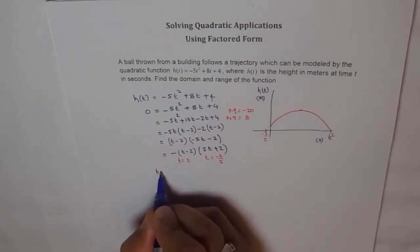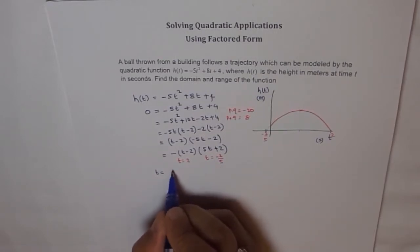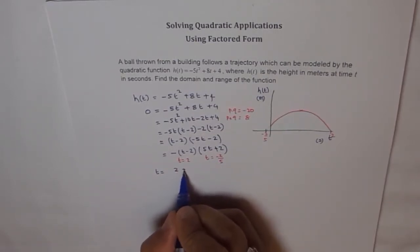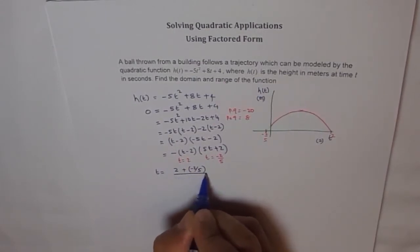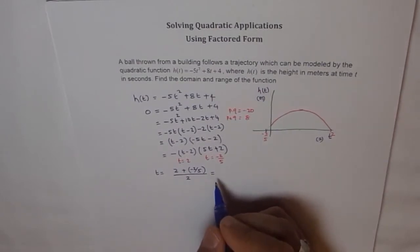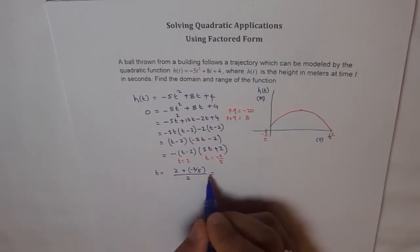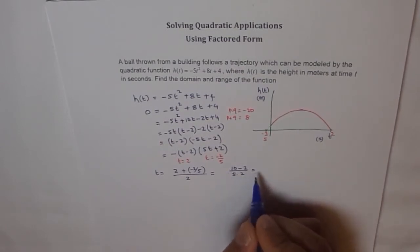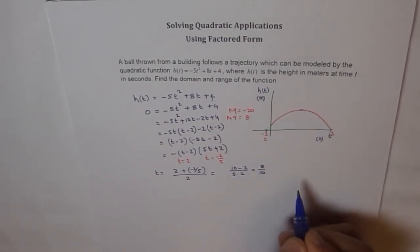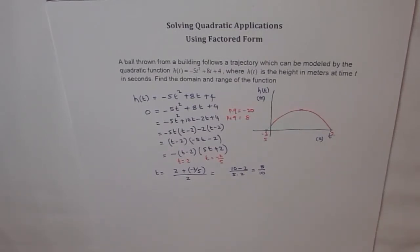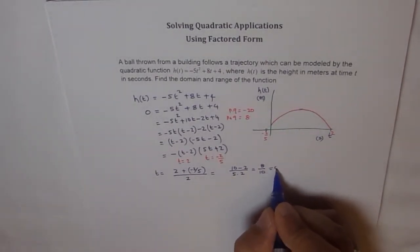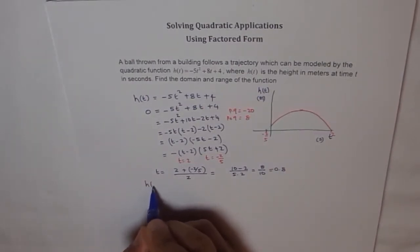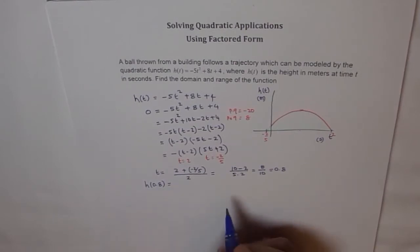Let us find the center value, the axis of symmetry for this graph. The axis of symmetry is t equals midway between t equals 2 and minus 2 over 5. That point t is equal to 2 plus minus 2 over 5 divided by 2. That gives us the center value. We will take 5 as a common denominator: 5 times 2 is 10 minus 2 over 5 times 2, which is 8 over 10. So 8 over 10 or 0.8 is the time.